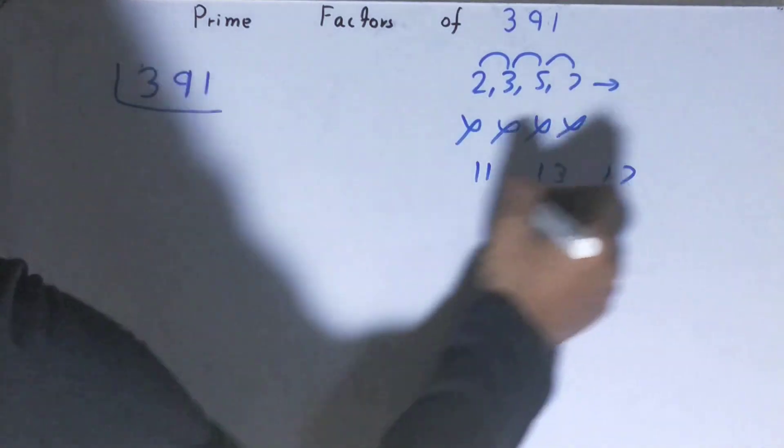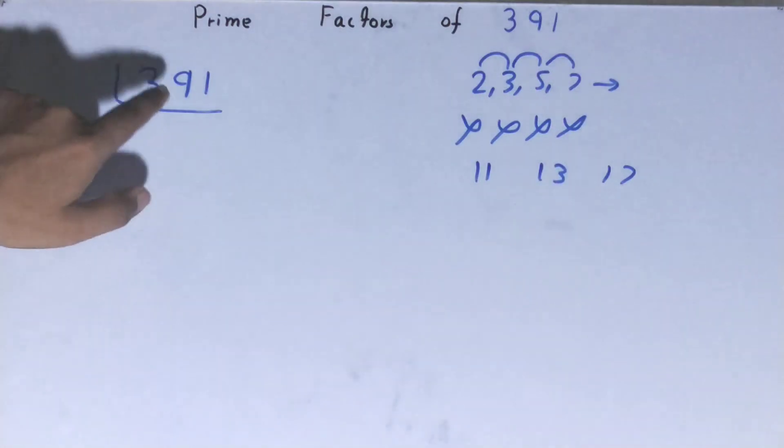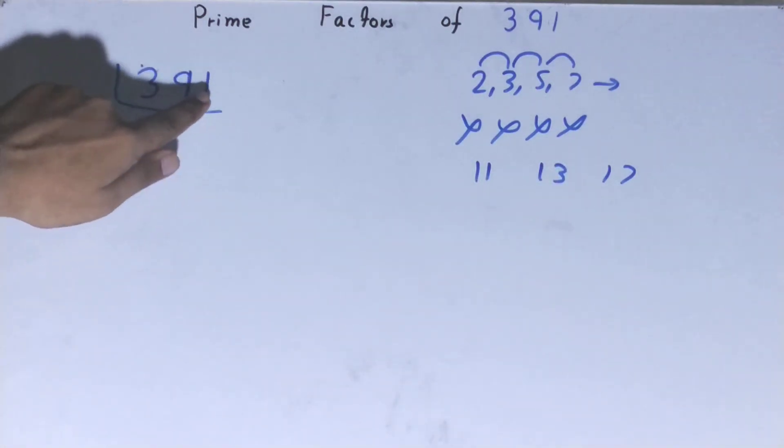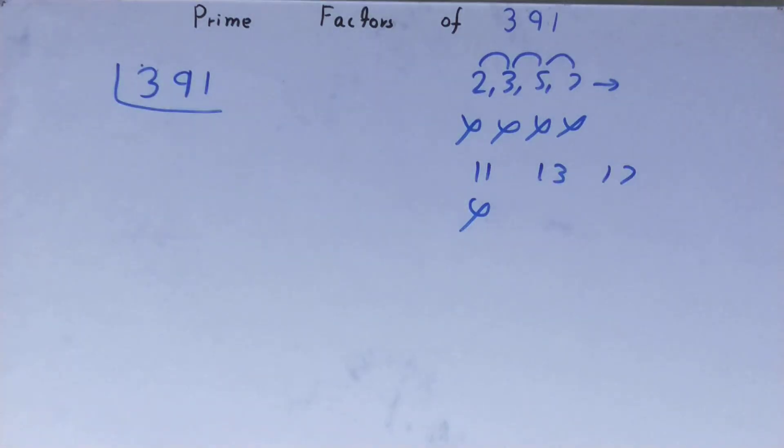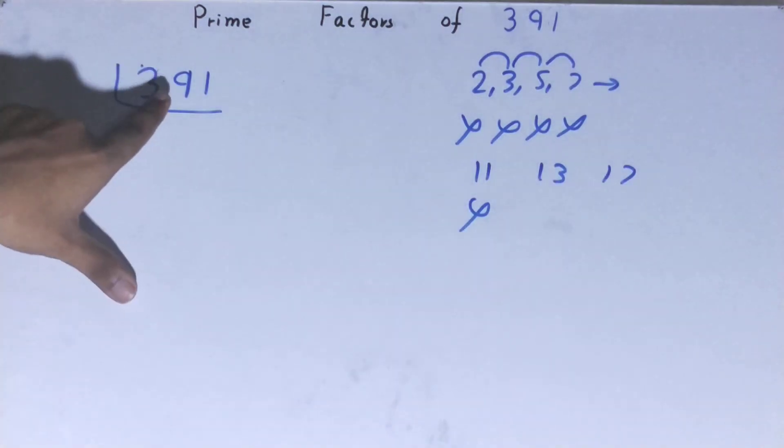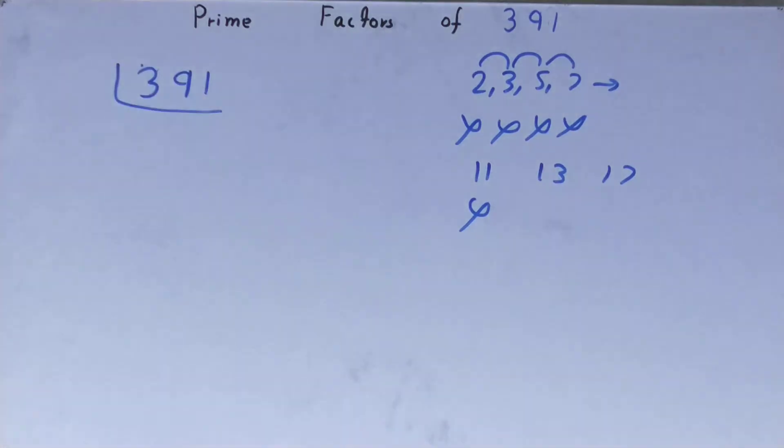It is not divisible by 11 also. We'll go to the next lowest prime number, that is 13. 13 times 36 is 39, 1 left. No, it is not divisible by 13 also.